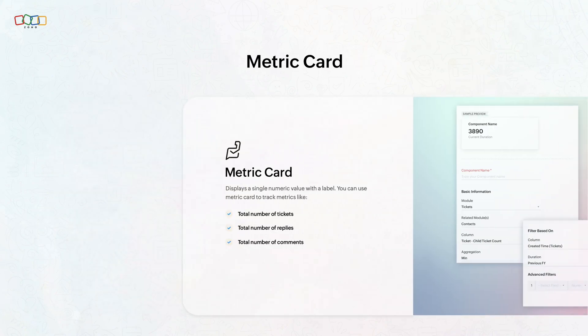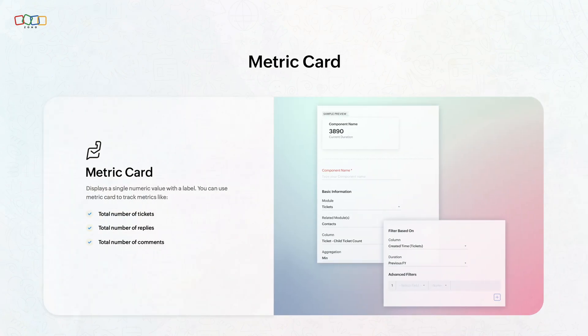First, we have the metric card, which displays a KPI with its label. This card is perfect when you want to track a metric in a simple and straightforward way.